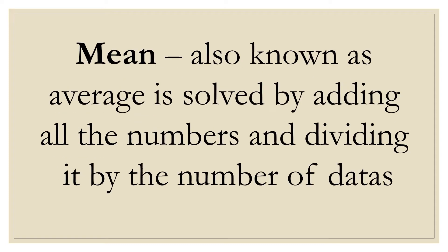Mean, also known as the average, is solved by adding all the numbers and dividing it by the number of data. So again, another term for mean is the average. And we do this by adding all the numbers and then dividing it by however many numbers are available or how many data points there are.